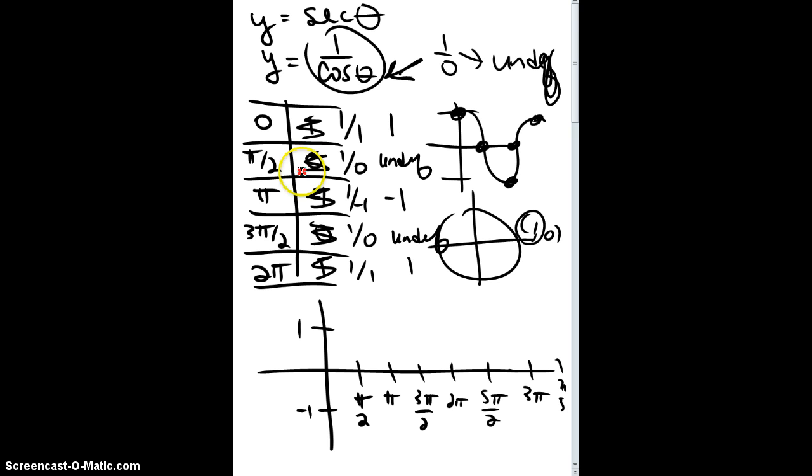Alright, so my asymptotes, well, at pi over two I have one, I have another one at three pi over two, so it looks like all my fractional pieces, so pi over two, three pi over two, five pi over two, skip the nice ones. Alright, so those are where all my asymptotes are.